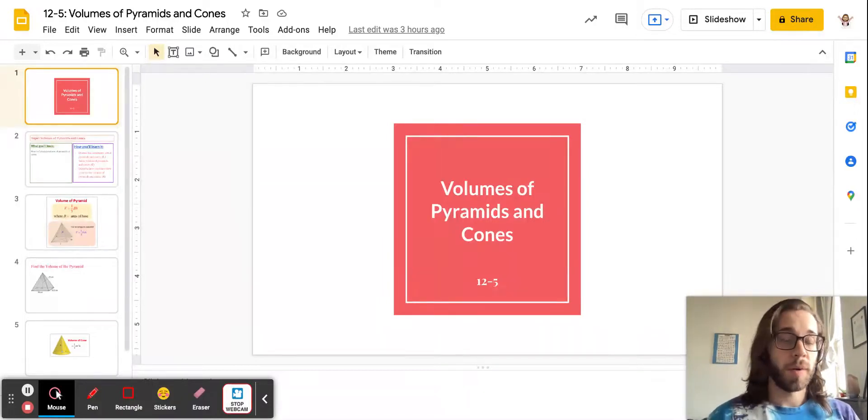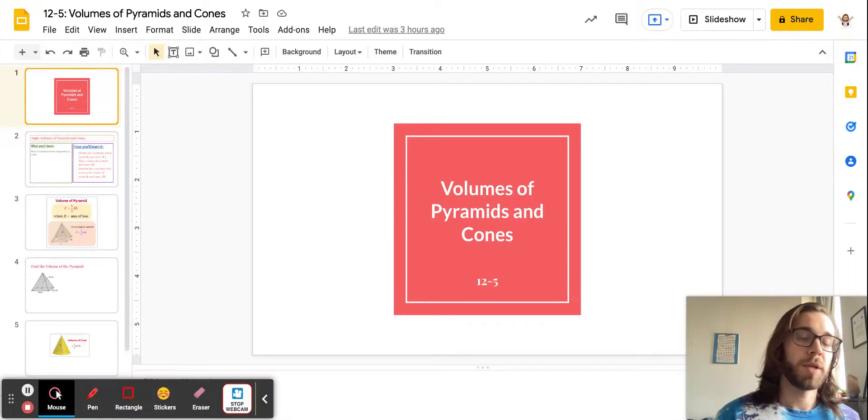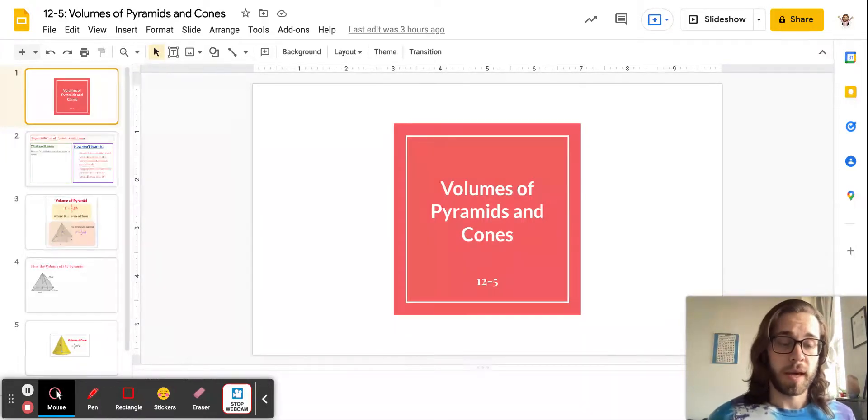We're continuing on with volume, which again, as we said, was the amount of space taken up by a three-dimensional object. And as we saw before with prisms and cylinders, it really kind of came down to the area of the base times the height.